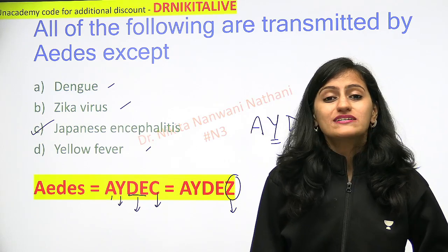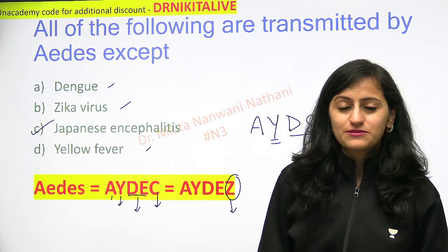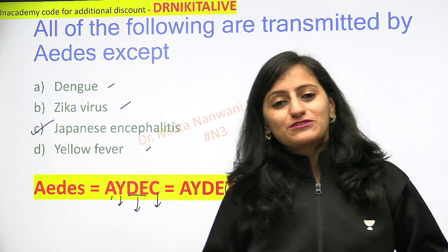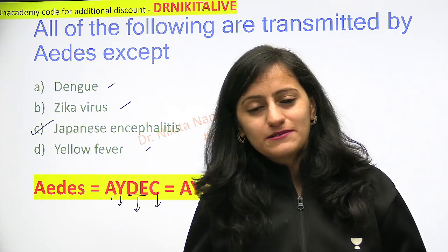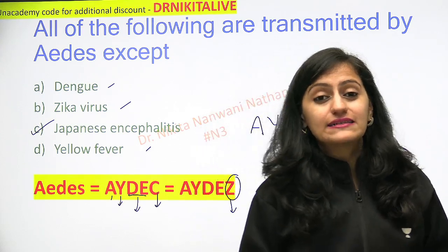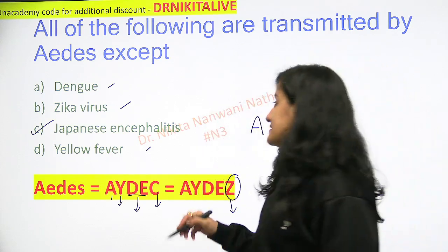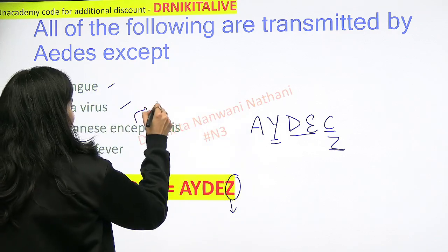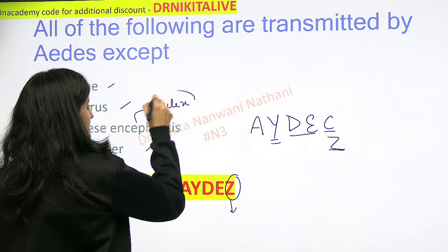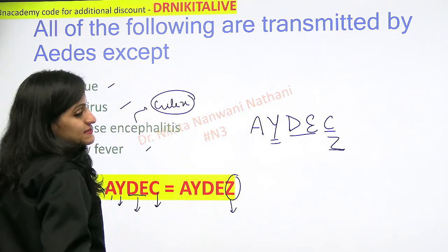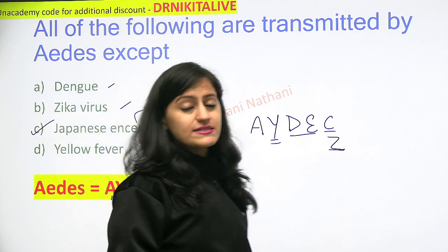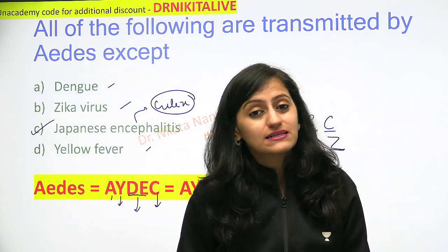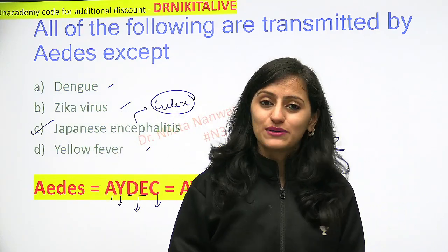So what is Japanese encephalitis transmitted by? Remember it by: Japanese people talking a lot, doing a lot of 'kal kal' — that is Culex. So remember, Japanese encephalitis is transmitted by the Culex mosquito. Japanese doing a lot of 'kal kal' — that is Culex.